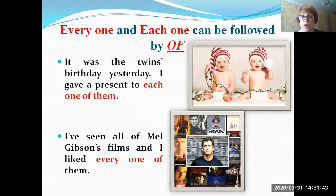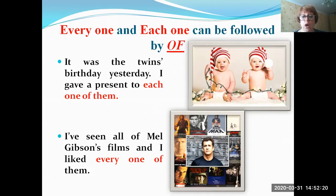We can also use these determinants in expressions with the preposition 'of': 'every one of' and 'each one of.' For example: 'It was the twins' birthday yesterday. I gave a present to each one of them' — we use 'each' for two people, the two twins. Another example: 'I've seen all of Mel Gibson's films and I liked every one of them' — every one of this group of many films.